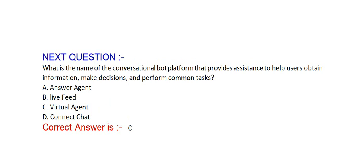Next question: What is the name of the conversational bot platform that provides assistance to help users obtain information, make decisions, and perform common tasks? Option A: answer agent. Option B: live feed. Option C: virtual agent. Option D: connect chat. Correct answer is Option C, virtual agent.